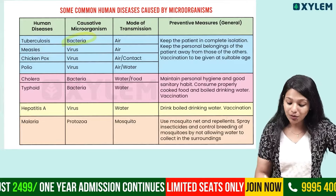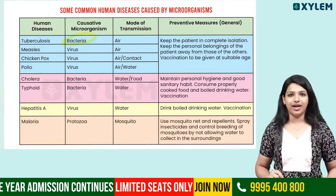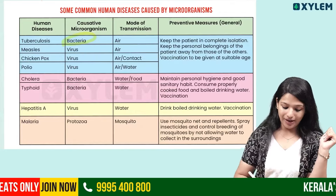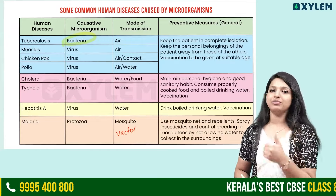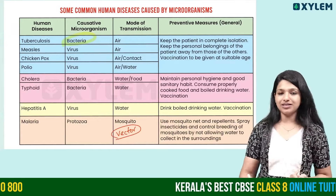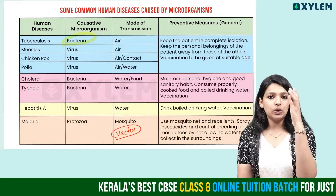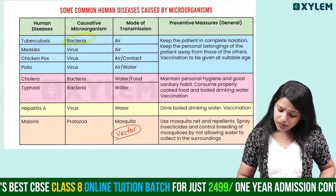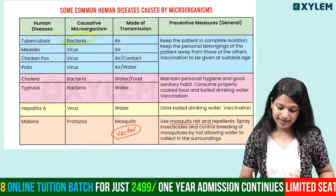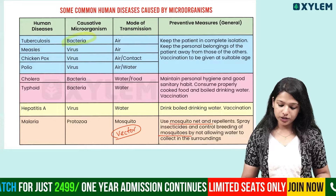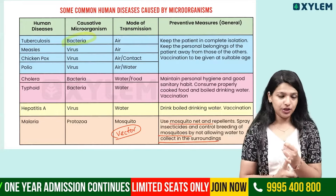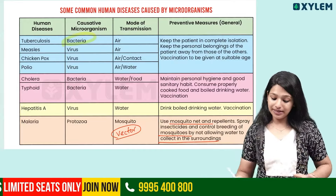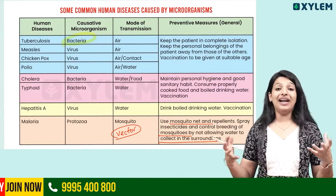Malaria. The causative organism is a Protozoa. It is spread by a vector called the mosquito. Prevention includes: use of mosquito nets, repellent spray, insecticides, and controlled breeding of mosquitoes by not allowing water to collect in surroundings.